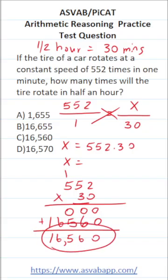In other words, if the tire can rotate 552 times in one minute, that means it's going to rotate 16,560 times in 30 minutes. So this one is C.